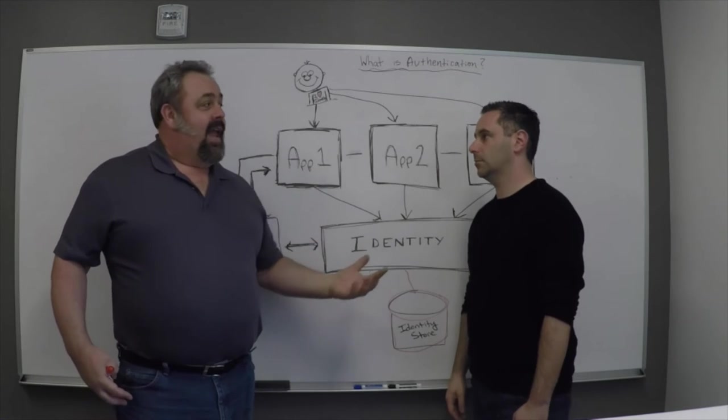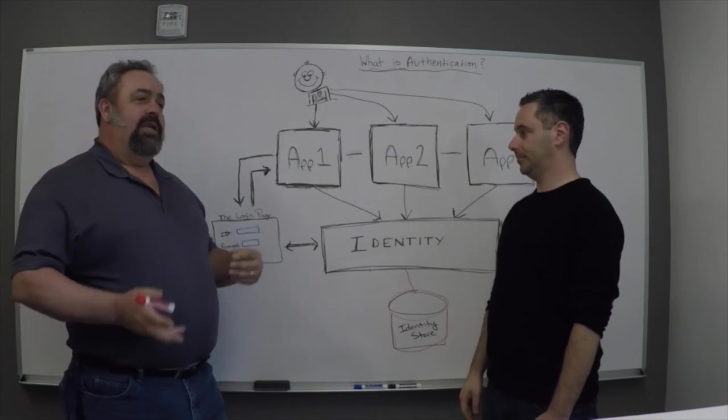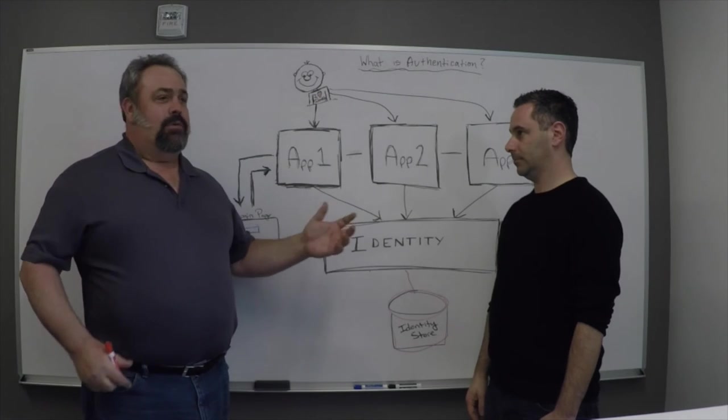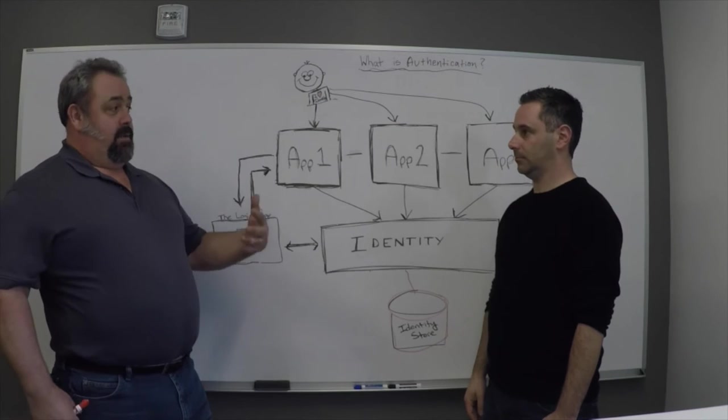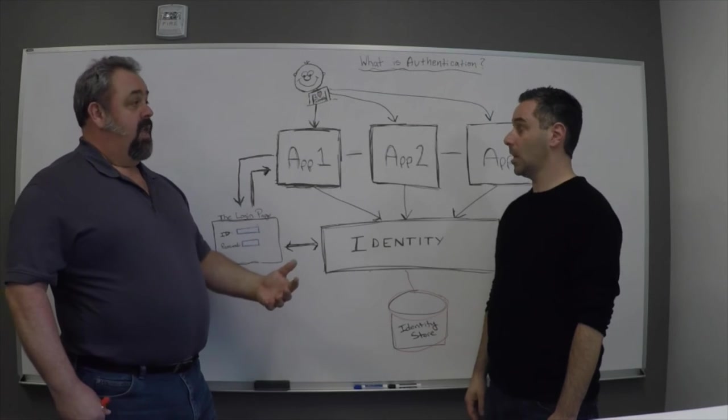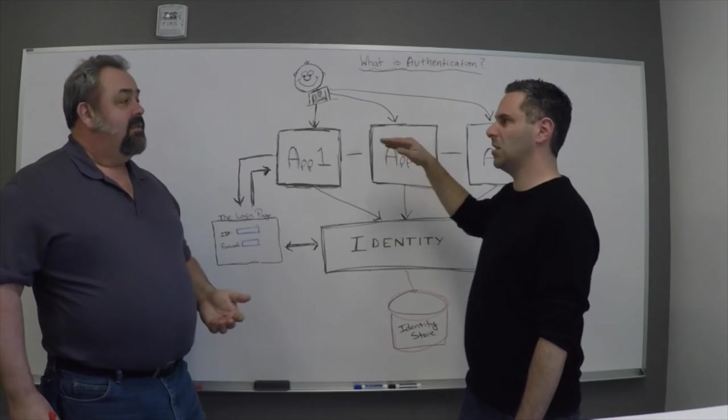We've all used banking applications where you've got a username and password and some magic pin, or there's other applications where you have to use some kind of secret token that gets emailed to you. So each one of these are different ways of determining who that user is. Based on the security of the app, based on the importance or how much security you want to build into those apps...